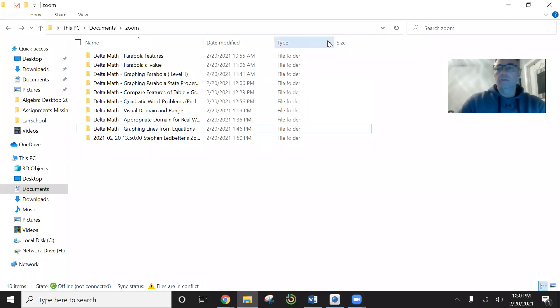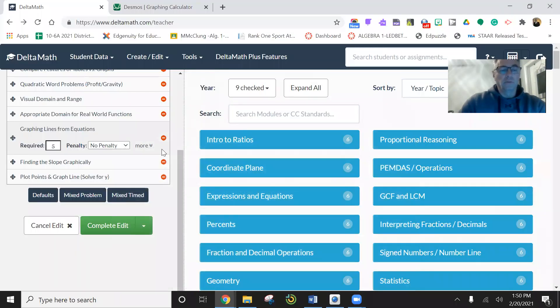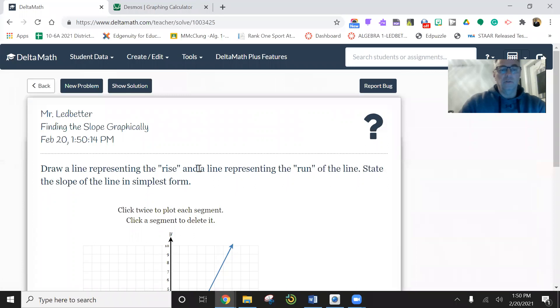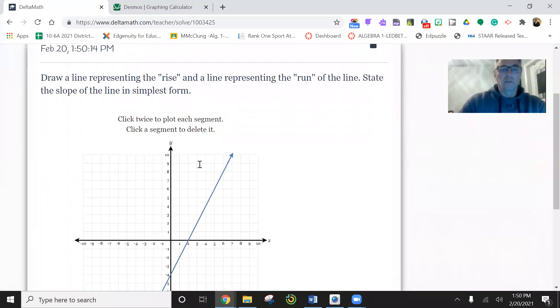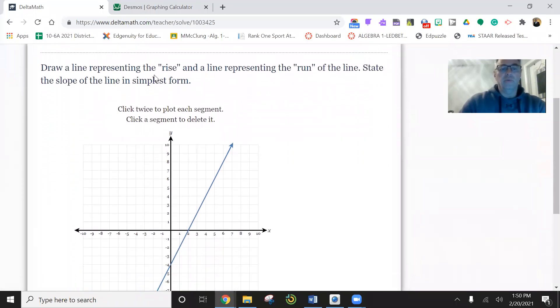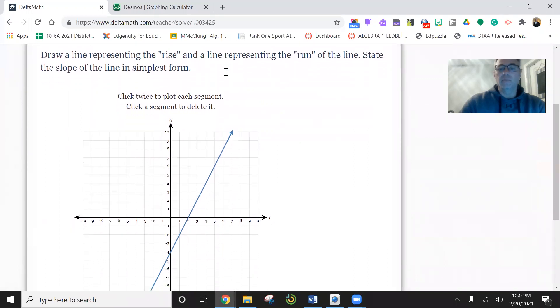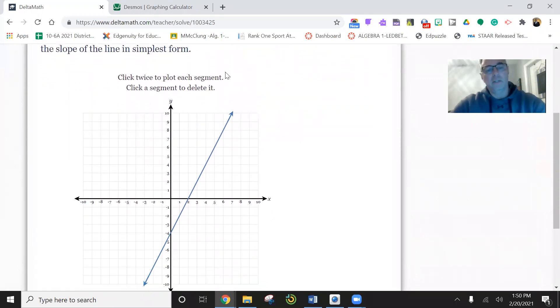All right, this time we're going to do finding slope graphically. So here is this one. Find a slope. Draw a line representing the rise and a line representing the run. This is the one where you have to do little dots. It says click twice to plot each line segment.